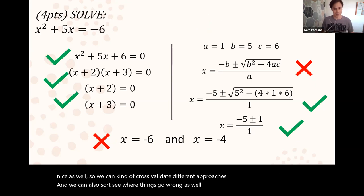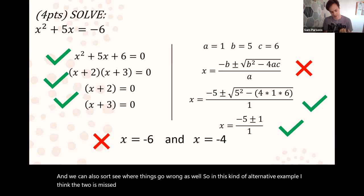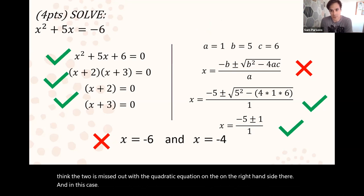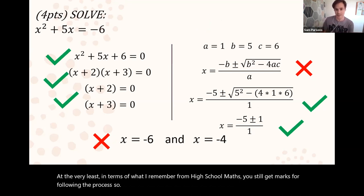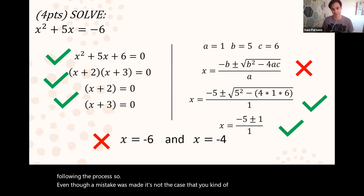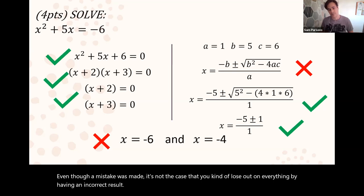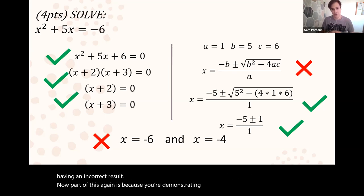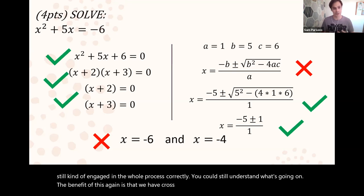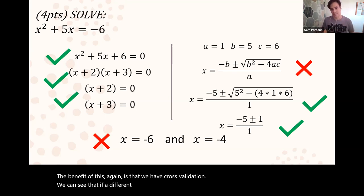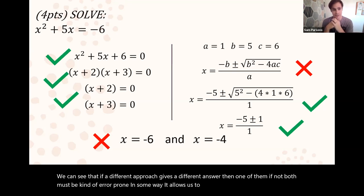In this alternative example I think the two is missed out of the quadratic equation on the right hand side and in this case at the very least in terms of what I remember from high school maths you still get marks for following the process. Even though a mistake was made it's not the case that you lose out on everything by having an incorrect result. Part of this is because you're demonstrating that despite that minor error you've still engaged in the whole process correctly. The benefit is that we have cross-validation. We can see that if a different approach gives a different answer then one of them if not both must be error prone in some way. It allows us to correct the answer which is just as important.